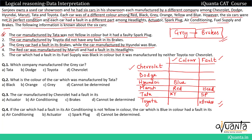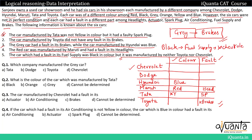The last clue is the car which had a fault in its fuel supply was black in color, but it was manufactured by neither Toyota nor Chevrolet. So we can note a black car with a fault in fuel supply, which doesn't belong to Chevrolet and also not to Toyota.